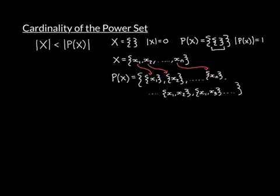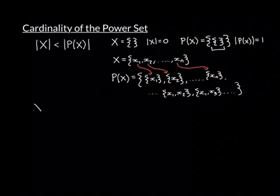So let's now go on to infinite sets. We're now going to imagine that X is an infinite set. We're not going to specify whether it's countable or uncountable — it's just going to be an infinite set, because this proof is going to work whether our infinite set is countable or uncountable.